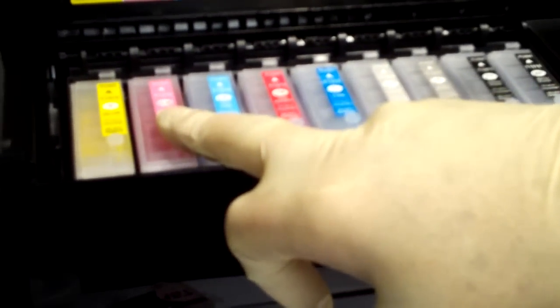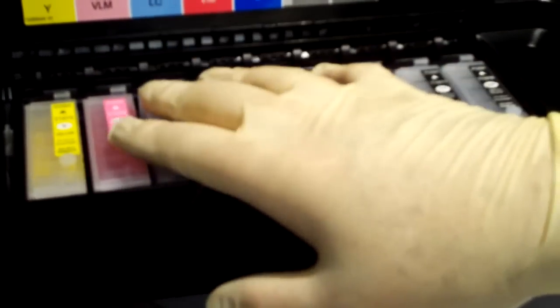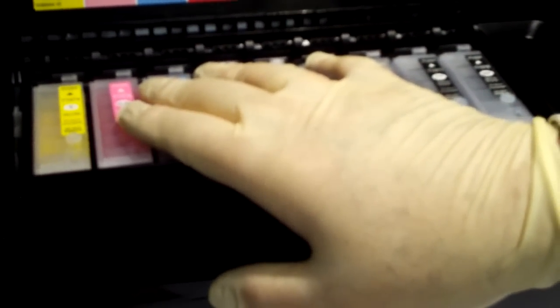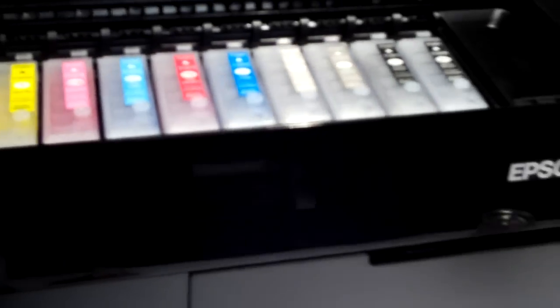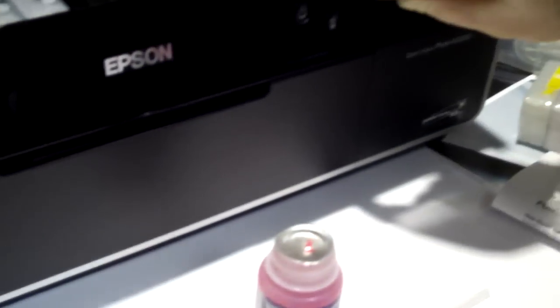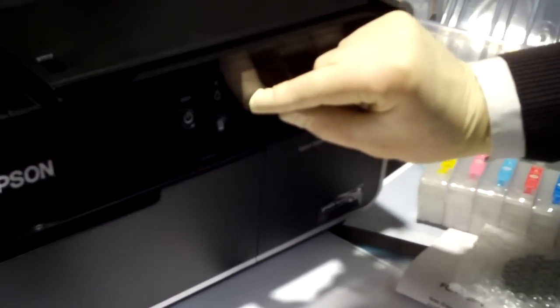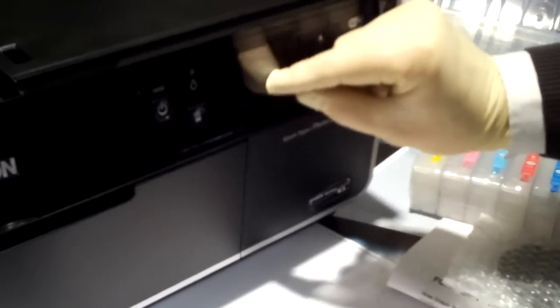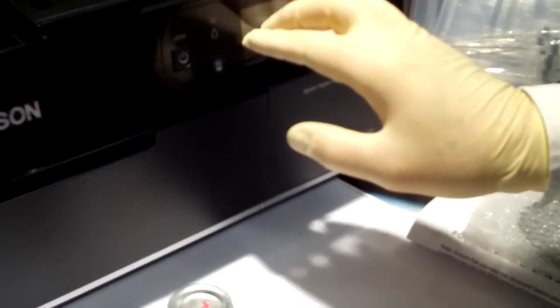What you then do is having completed that, you simply push it into the printer and you're ready to go. Now the printer itself will function exactly as if it had the original brand cartridge in. The little front control, the little readouts will look exactly the same and they'll go down over time.